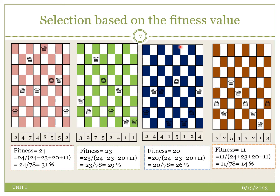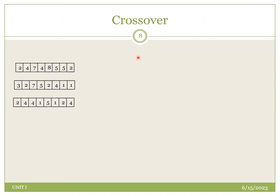Our task is to select the best fitted population. Out of four populations, the first three each have around 20% or more fitness value, while the last one has less than 20% and is the least fit. So we eliminate this unfitted population. After selection, we have three best populations that will undergo the reproductive process — that is, crossover.